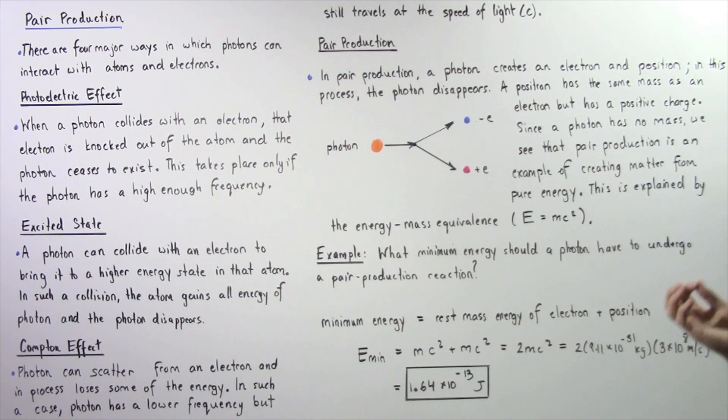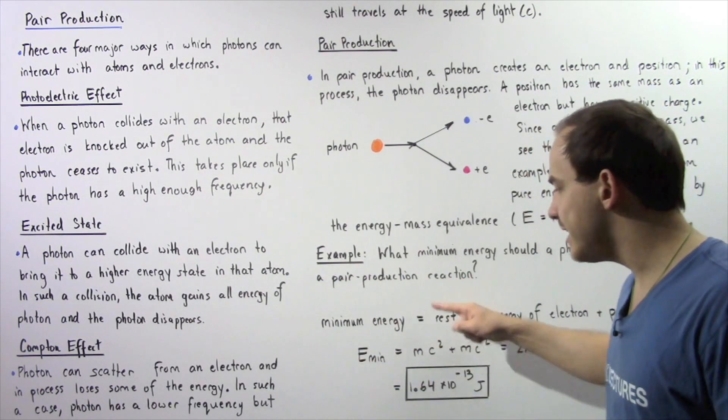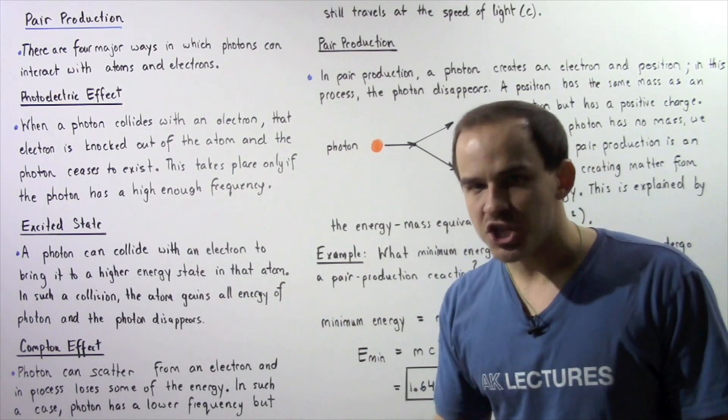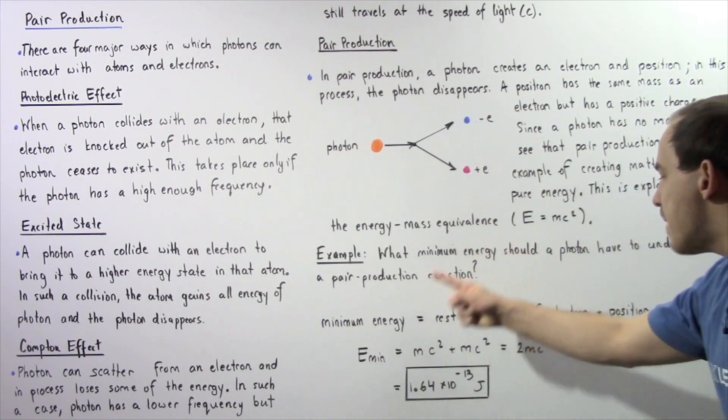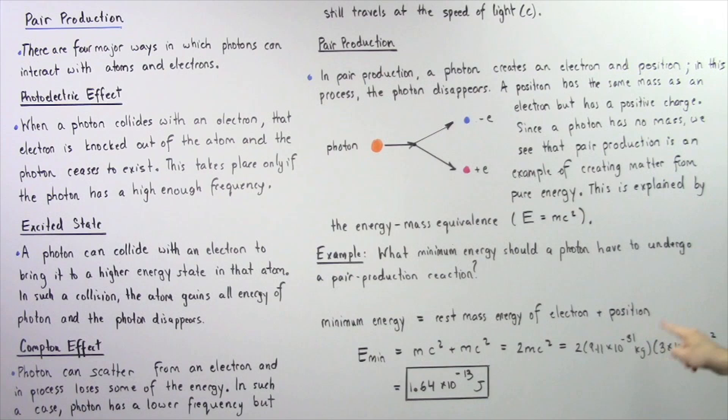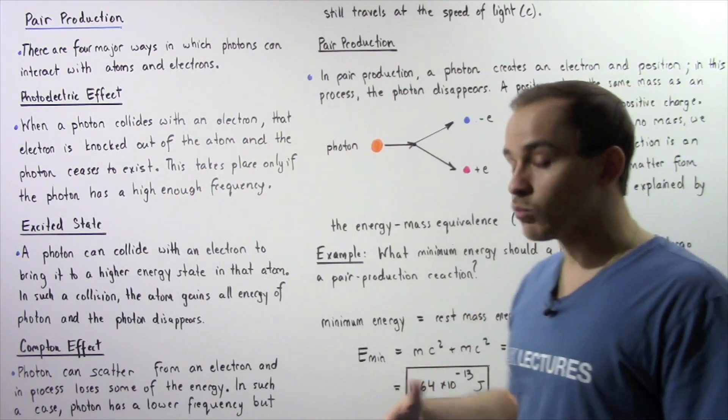What minimum energy should a photon have to undergo a pair production reaction? Basically, we're equating the minimum energy of a photon to the rest mass energy of the electron and the positron. The rest mass energy of a subatomic particle is given by this equation, E equals MC squared,